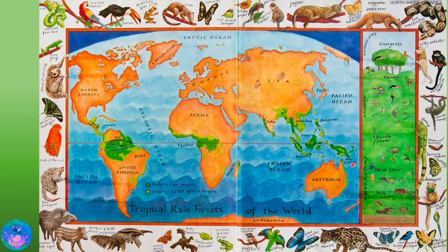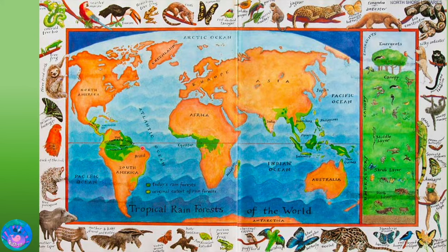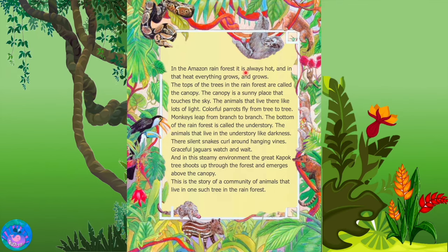Now the tropical rainforests are called so because first of all they are found in the tropical regions and secondly because it rains a lot over there. These are really dense forests with huge trees. Our story is set in these rainforests which are around the Amazon River. Hence they are also called the Amazon rainforests. In the Amazon rainforest it is always hot and in that heat everything grows and grows.